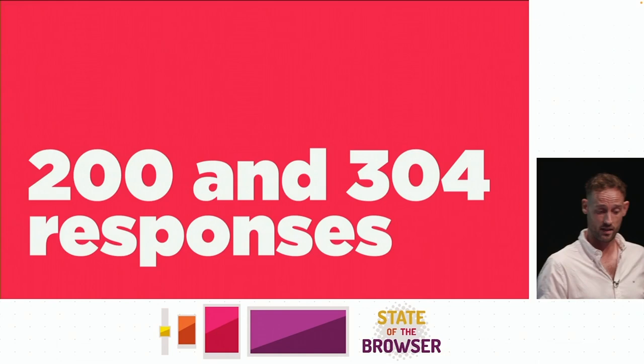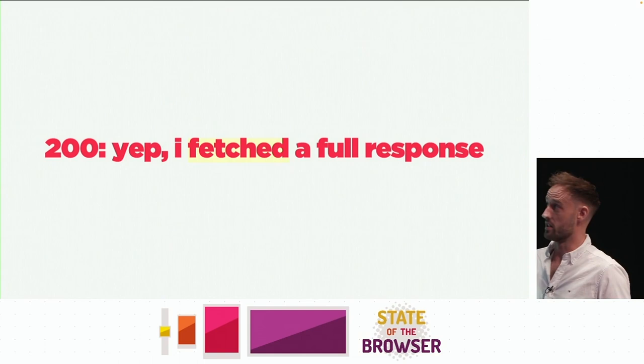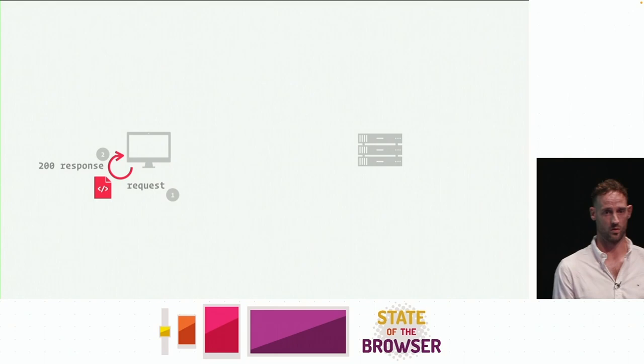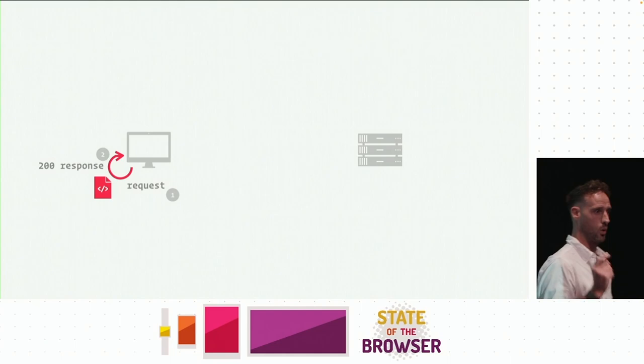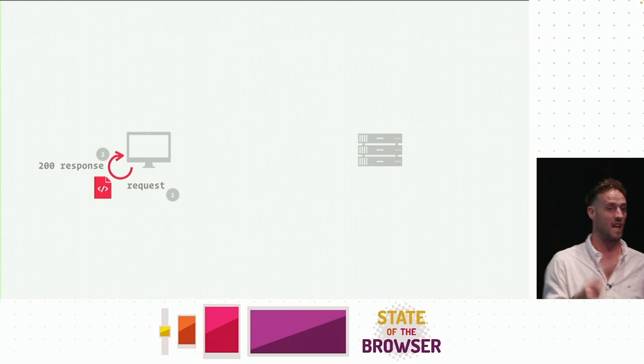We need to deal with 200 and 304 responses — these are pretty much the only two status codes you need to be aware of when looking at caching. A 200 means I fetched a full response. Interestingly, a cache hit also yields a 200 — 200 just means nothing went wrong, whether the response came from the server or from the cache. A 304 means: I've checked, and you can still reuse the file in cache. Think of a 304 as a renewal.